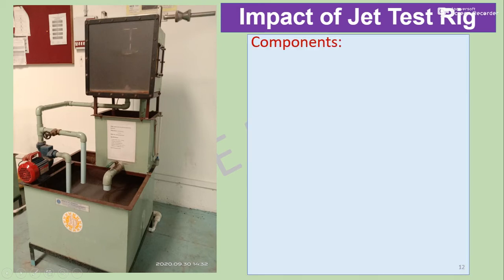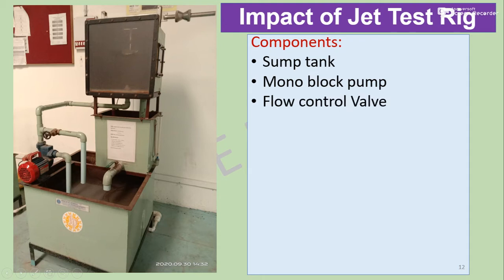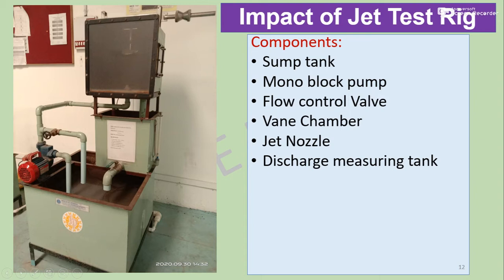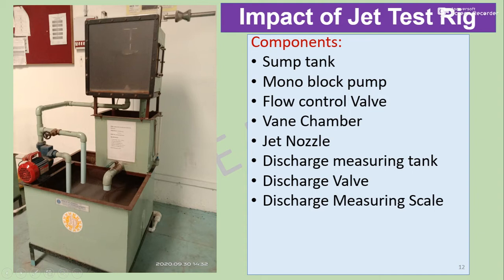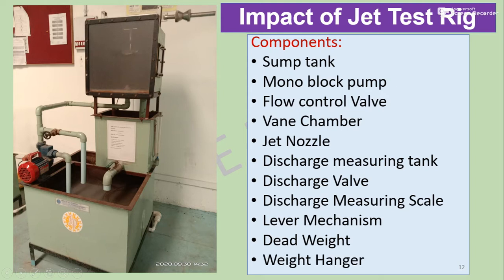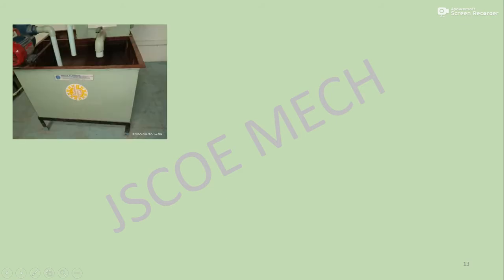Components of the test rig are: a sump tank used to store water; a monoblock pump used to lift the water; a flow control valve used to control and regulate the flow directed towards the blade or plate; a vane chamber in which the plate is fixed or attached; a jet nozzle which imparts the jet on the plate; a discharge measuring tank; a discharge valve; a discharge measuring scale; a lever mechanism; a dead weight or balance weight; and a weight hanger.